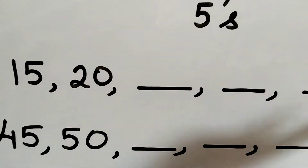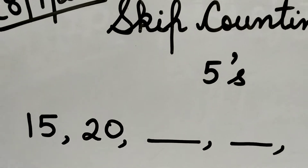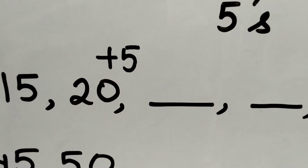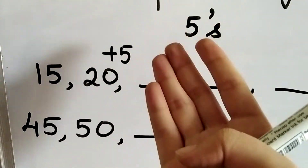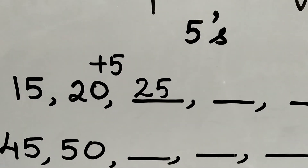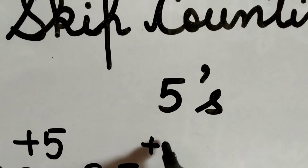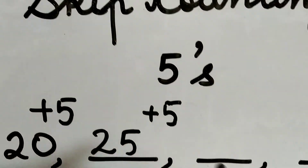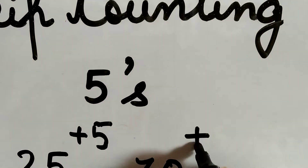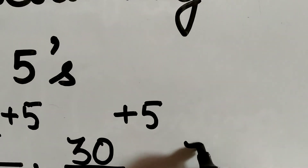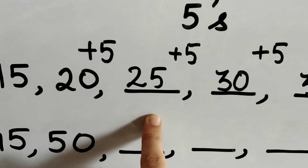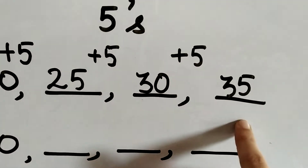Now you need to complete the given blanks based on skip counting in fives. From 20 you are going to add plus 5. When we add 5 to 20 we get 25, so write 25 here. Again we add plus 5 to 25: 25 plus 5 is 30, so write 30 here. Then 30 plus 5 is 35.